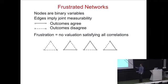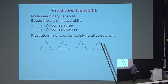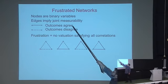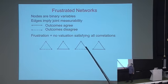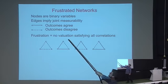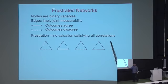Let me introduce frustrated networks in general. The nodes represent binary variables, the edges imply joint measurability, a solid line denotes that outcomes agree, and a dashed line denotes that outcomes disagree — as we already saw in the context of PR box correlations. A network is frustrated if there's no assignment of values to the nodes that satisfies all the correlations they're supposed to satisfy. All these examples are frustrated networks on a triangle.